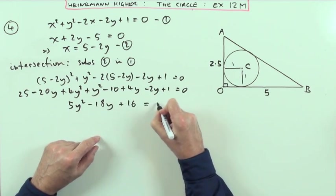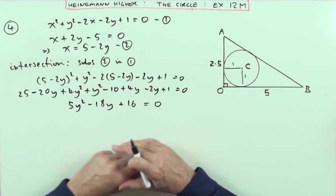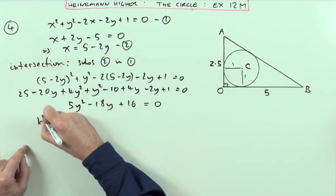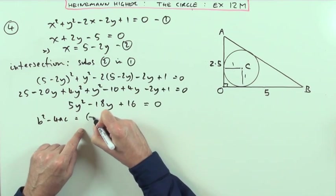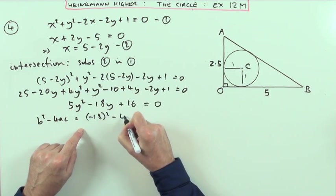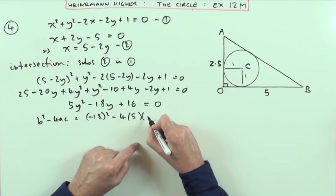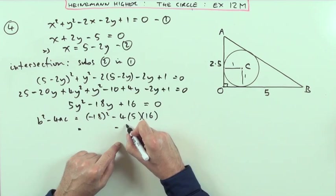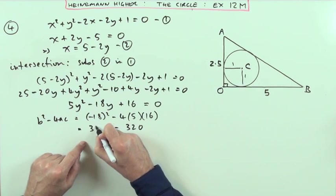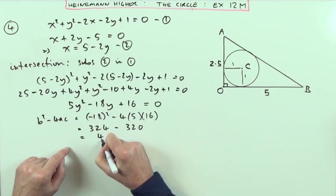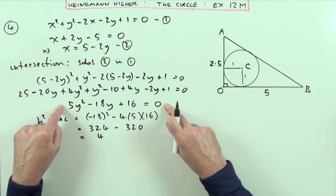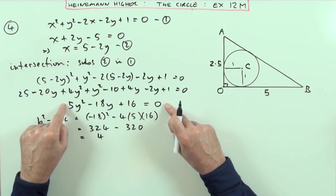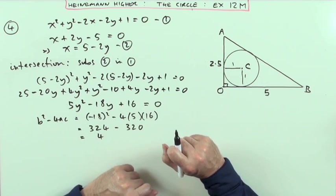Now it's just a case of how many answers does that have. You'll find that by getting the discriminant. What's b² minus 4ac? It's going to be (-18)² minus 4 times 5 times 16. That's 320 and that's 324, so the answer is 4. That means this quadratic would have factorized - the discriminant is a perfect square so you'd have rational roots.